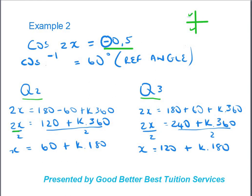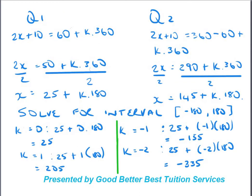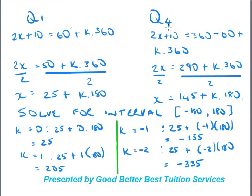Now we'll look at finding both the general solution and a specific solution for a particular interval. For cos(2x + 10°) = 0.5: the reference angle is 60°. Cosine is positive in quadrant one and quadrant four. For quadrant one: 2x + 10° = 60° + k×360°.